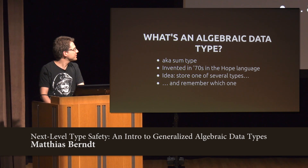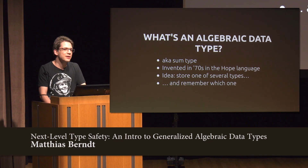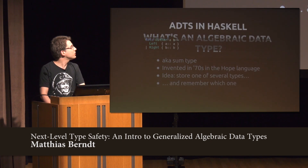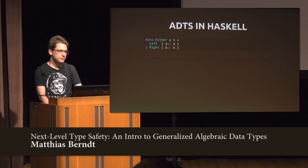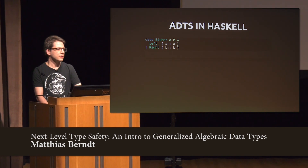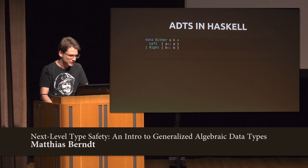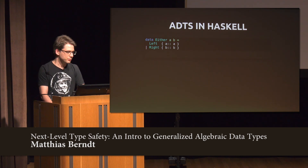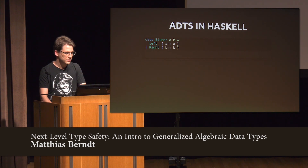These algebraic data types spread out to many statically typed functional programming languages like SML or Haskell, and they would look something like this. You have a keyword to introduce the declaration, which is 'data'. Then there's the name of the data type — 'Either' — and a list of type parameters A and B. Then there's a list of constructors: it can be a Left, with a parameter of type A, or a Right, with a parameter of type B.